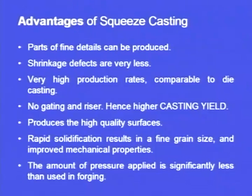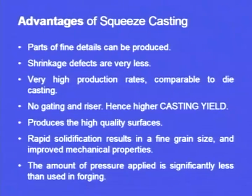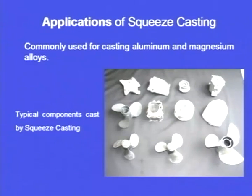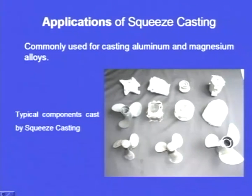In forging we get good mechanical properties, but the external force applied is more, requiring costly hydraulic presses and increasing production cost. Here moderate pressure is enough, decreasing the cost of production, while still giving good mechanical properties like forging. This process is mainly used for making aluminium and magnesium alloys, and we can see many typical component shapes made by squeeze casting.